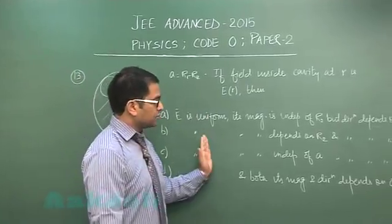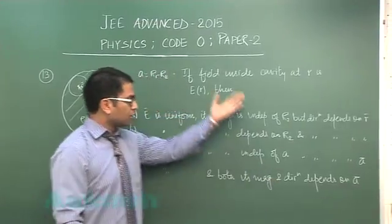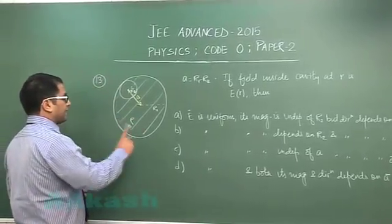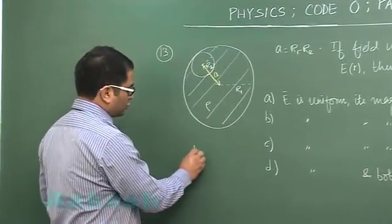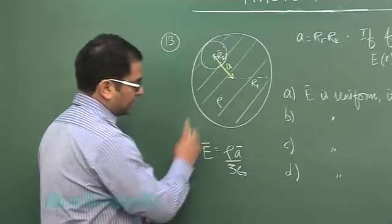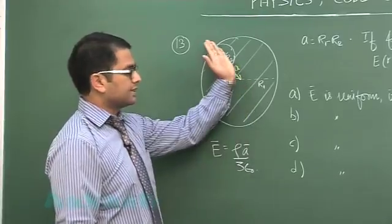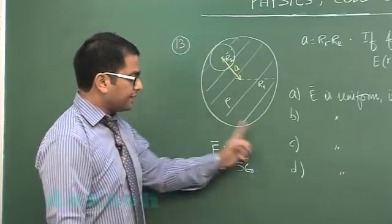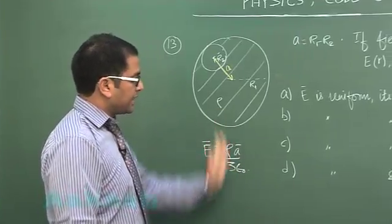We need to comment on E: whether it is uniform or not, whether it depends on r₂ or not, and whether it depends on a or not. If we take a vector as the vector directly pointing from the main center to the cavity center, then by the principle of superposition we can easily prove that the electric field anywhere in the cavity is ρa⃗ / 3ε₀, where a⃗ is the center-to-center vector. This clearly indicates that anywhere inside the cavity the magnitude of the field is constant, as well as the direction, which depends on a⃗.